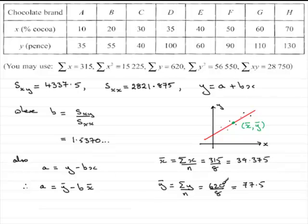So we can use these results then, sub them into here, and what we've got is that therefore a equals y bar, which we now know is 77.5, minus b, which was 1.5370 and so on. That's why we didn't want to round that. And then x bar, which is 39.375.